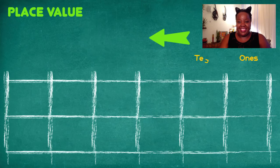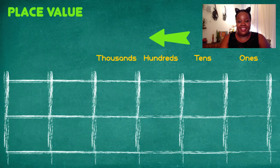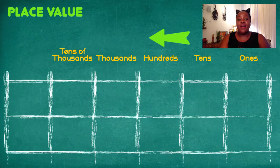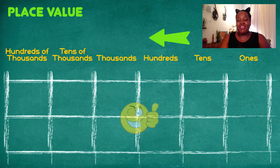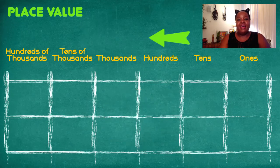In the second box we have our tens. In the third box we have our hundreds. In the fourth box we have our thousands. In the fifth box we have our tens of thousands. And in the sixth box we have our hundreds of thousands. Great, well done.